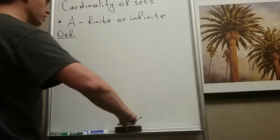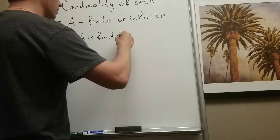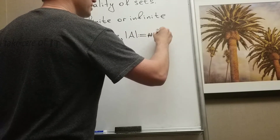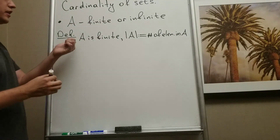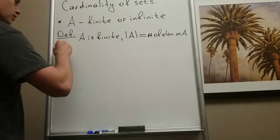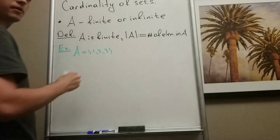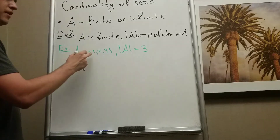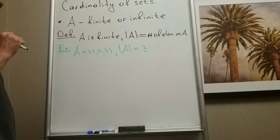We call the cardinality of A as follows: if A is finite, then the cardinality of A is defined to be the number of elements in A. So cardinality is just how many elements we have in our set. For example, let's take A with elements {1, 2, 3} — the cardinality of A is equal to three, because we have exactly three elements.